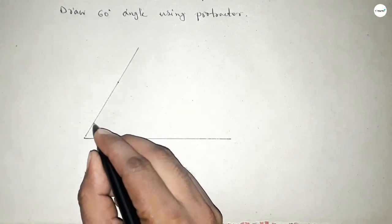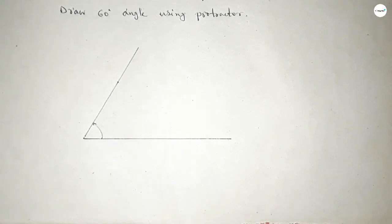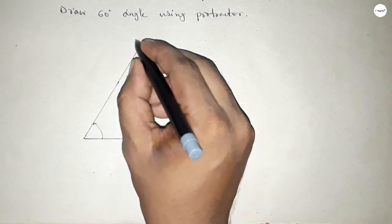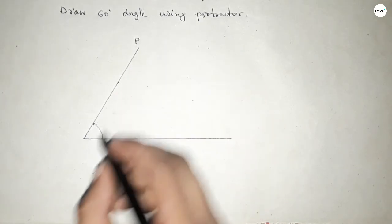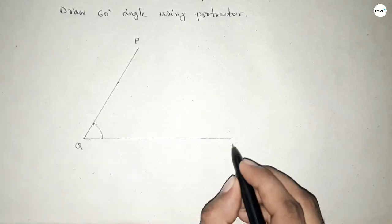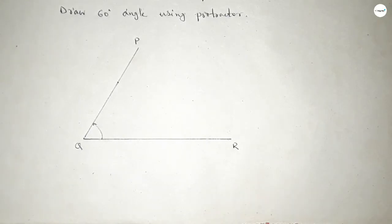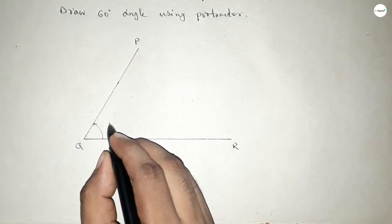Now this is P, Q, and this is R. So angle PQR equals 60 degrees.